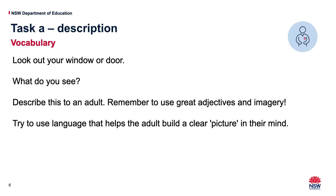So English Activity 4 - look out your window or your door. What do you see? I want you to describe what you see as if you're explaining it to someone who's not there. So it says describe this to an adult. What I'd like you to do is maybe type it or write it up, and rather than saying it to your mum or your dad or whoever's there with you, I want you to type it or write it and then describe it to me. What I'm going to do, if you're Miss Collie's class, is I'm going to try to draw what you see, and let's see if your explanation helps me draw what you see.